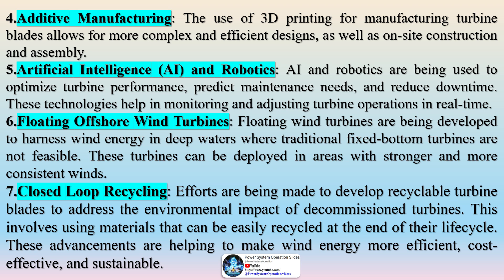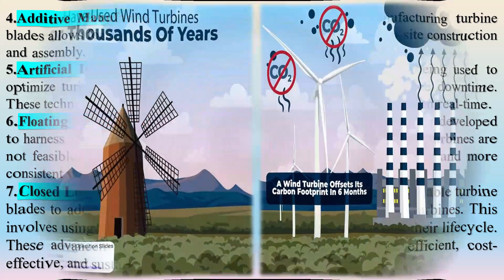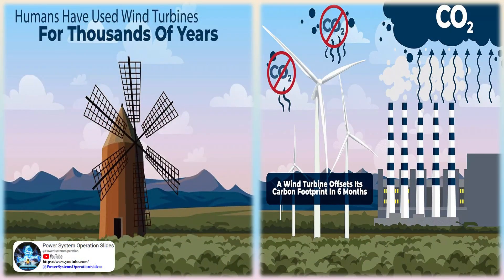Floating offshore wind turbines are being developed to harness wind energy in deep waters where traditional fixed-bottom turbines are not feasible, and can be deployed in areas with stronger and more consistent winds. Closed-loop recycling efforts are being made to develop recyclable turbine blades, using materials that can be easily recycled at the end of their life cycle. These advancements are helping to make wind energy more efficient, cost-effective, and sustainable.